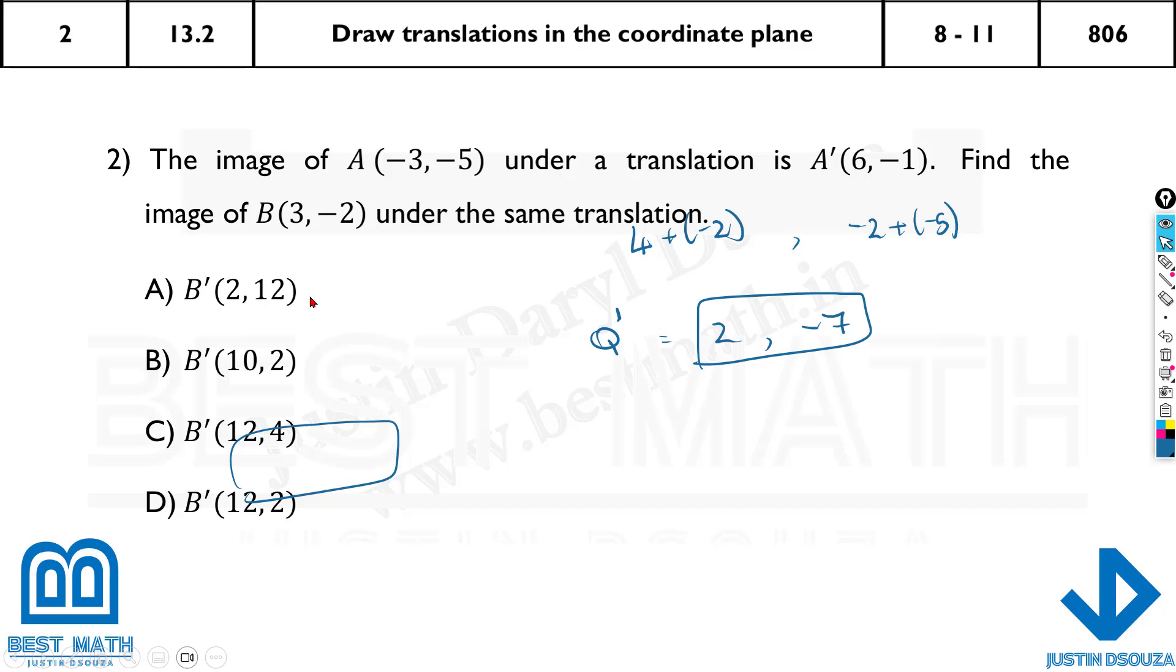And let us look into the next one. Here they have told that image A, under translation, is A-prime given over here, the coordinates. So what it means is, if you translate this given point, you get this point. And what is the, find the image of B, under the same translation.